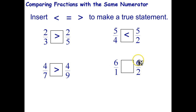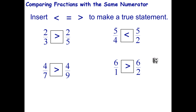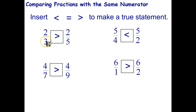For the last question, you're getting six whole pizzas compared to six-half pizzas. Six whole pizzas is more pizza than six-halves of a pizza. So in general, if your numerator is the same, then the bigger fraction is the one with the smaller denominator because the pieces are bigger.